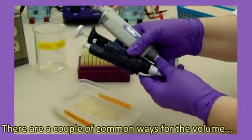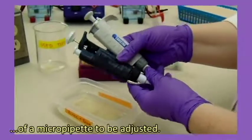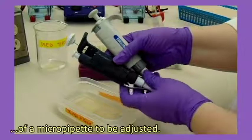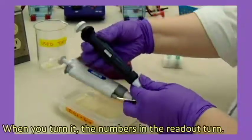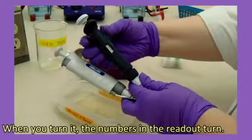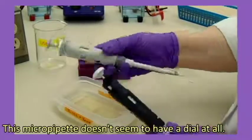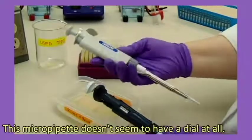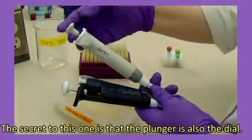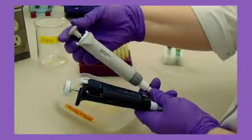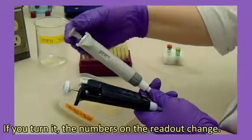There are a couple of common ways for the volume of a micropipette to be adjusted. This one has a separate inset dial. When you turn it, the numbers on the readout turn. This micropipette doesn't seem to have a dial at all. How do you adjust the volume? The secret to this one is that the plunger is also the dial. If you turn it, the numbers on the readout change.